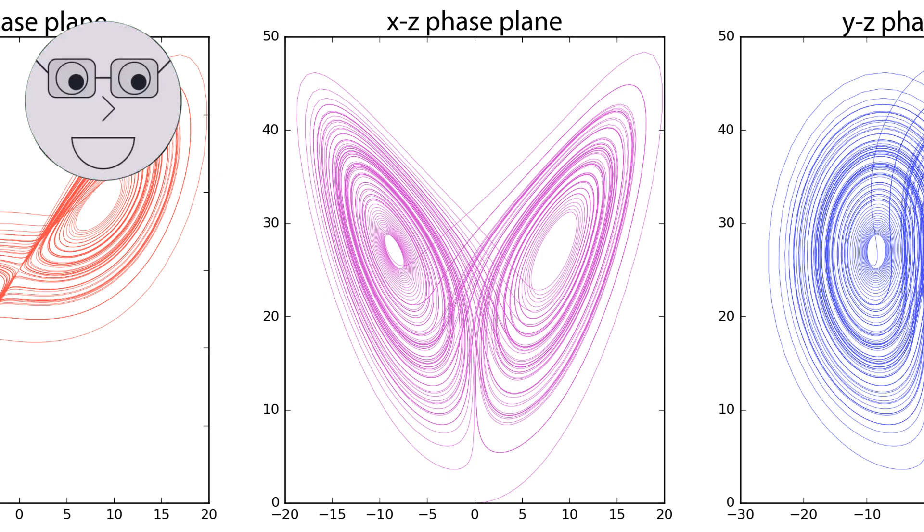One of the most famous examples of chaos theory in action is the Lorenz attractor. This is a mathematical model that describes the behavior of a simplified system of atmospheric convection. The Lorenz attractor is a strange attractor, which means that it exhibits chaotic behavior. Even though the system is governed by simple equations, it exhibits a complex and unpredictable pattern of behavior.